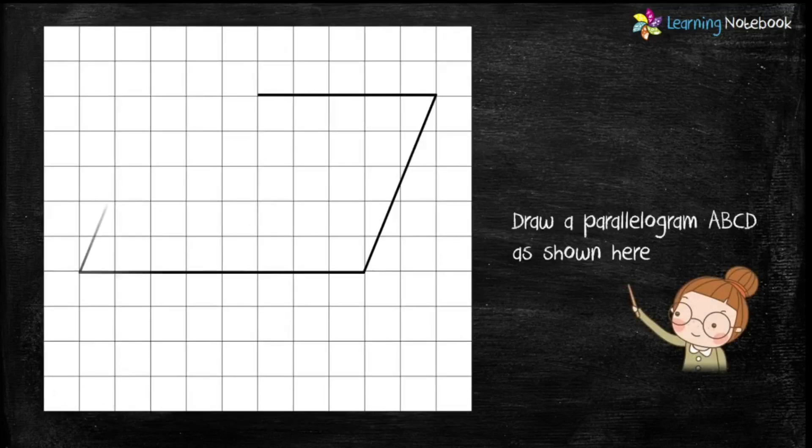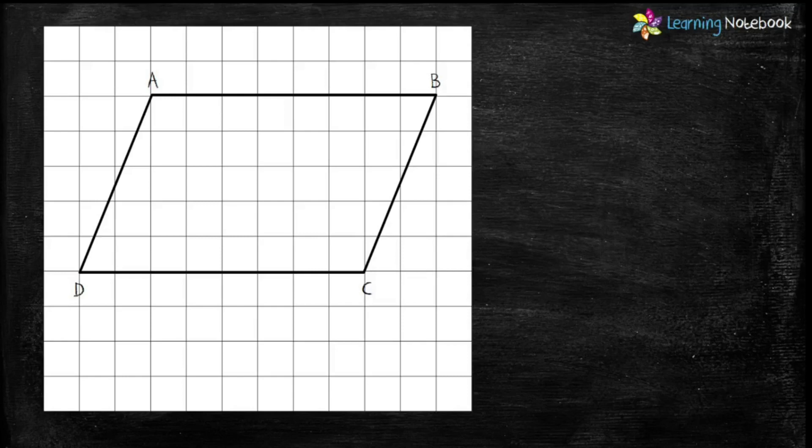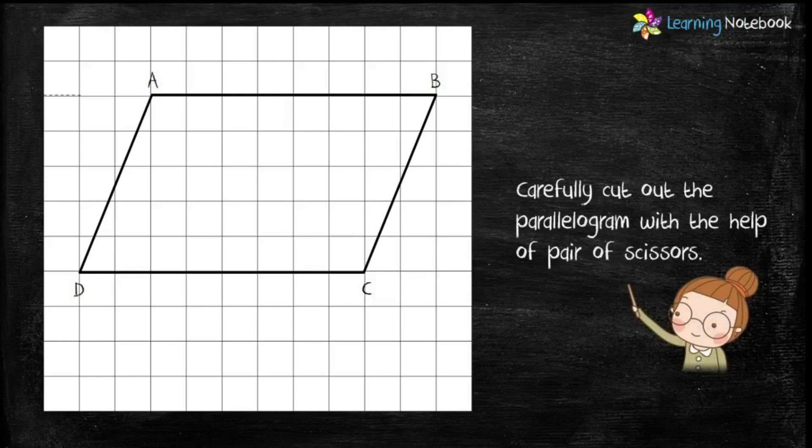So, let's start the activity. Take the grid sheet of paper and draw a parallelogram ABCD on it as shown here. Now, carefully cut out this parallelogram with the help of a pair of scissors.